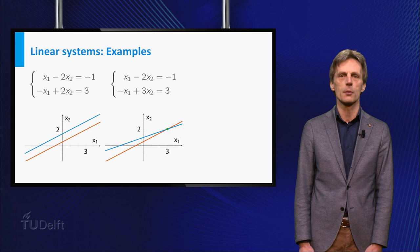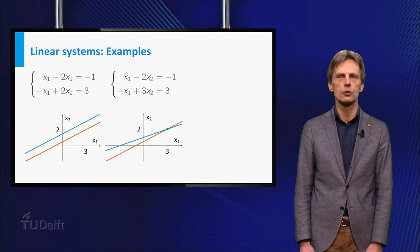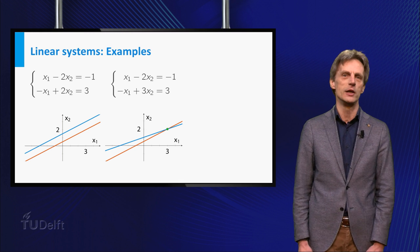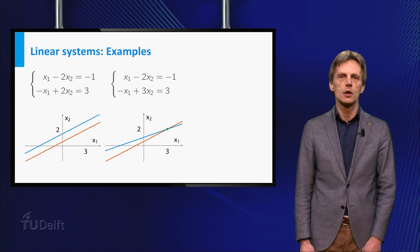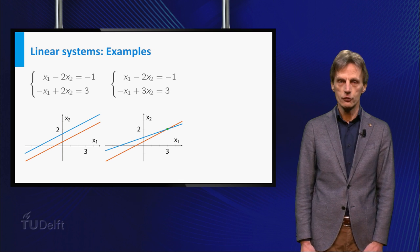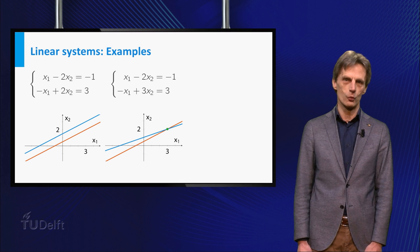Obviously these two lines are parallel, so this system has no solution at all, because there exist no numbers x1 and x2 for which both equations are true. So far we have seen an example of a system with a unique solution and an example of a system with no solution.